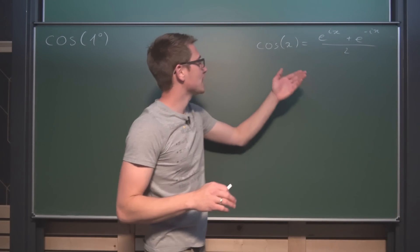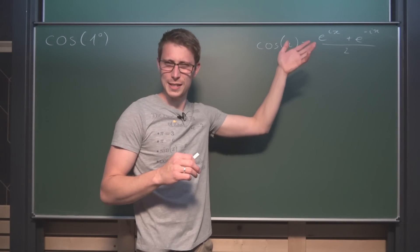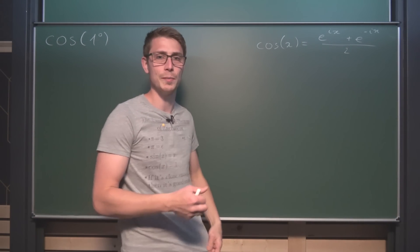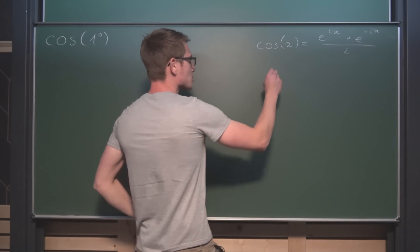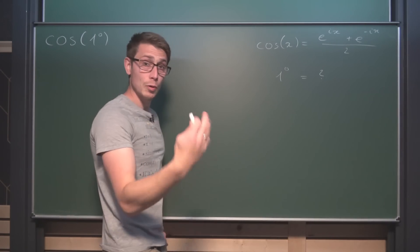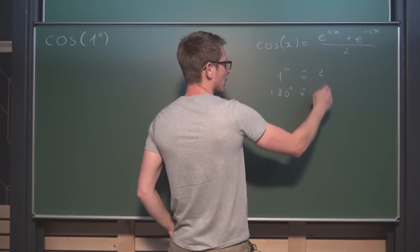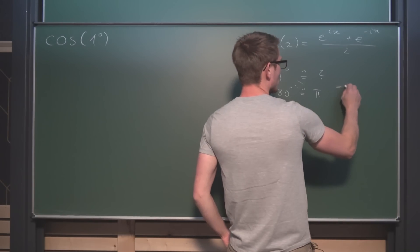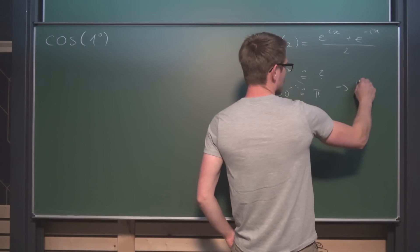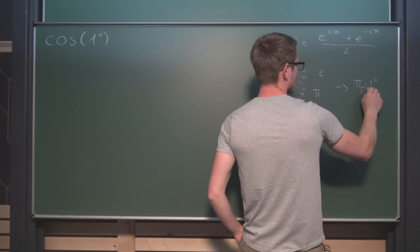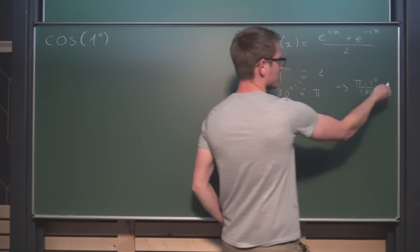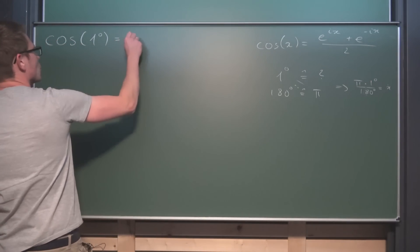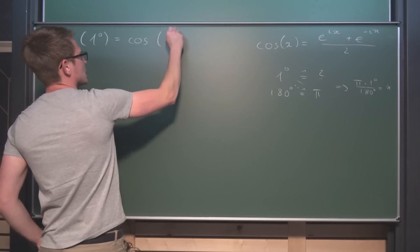Now we could plug all of this in, giving us e to the i times one degree. You can already see this is pretty disgusting, so we need to rewrite one degree in terms of π, because that's what we can handle in the complex realm. So what is one degree exactly? Remember that 180 degrees corresponds to π. Doing cross multiplication, we get that one degree corresponds to π divided by 180.